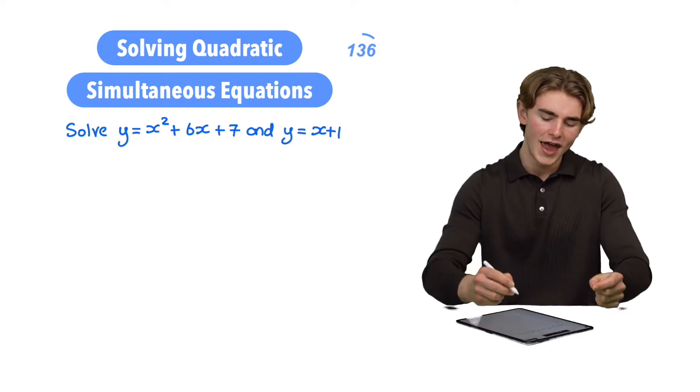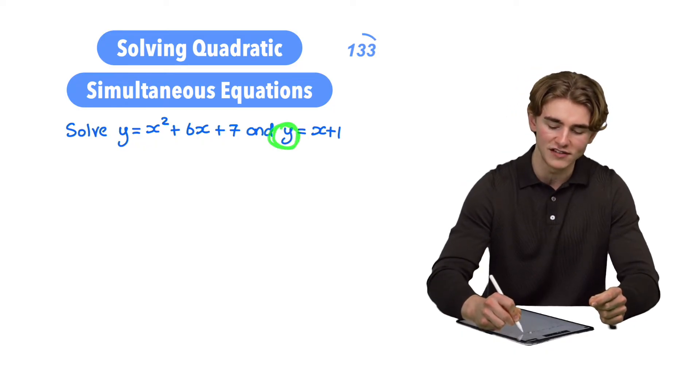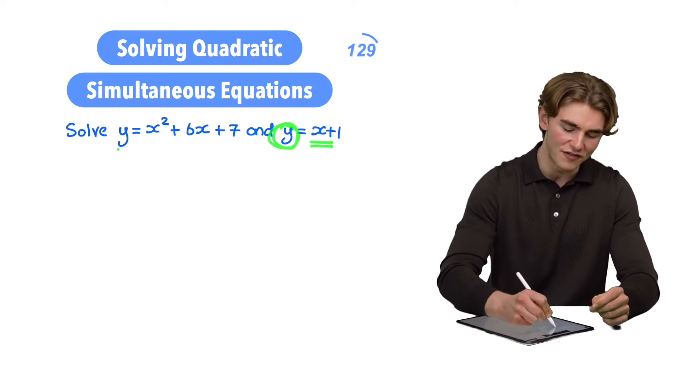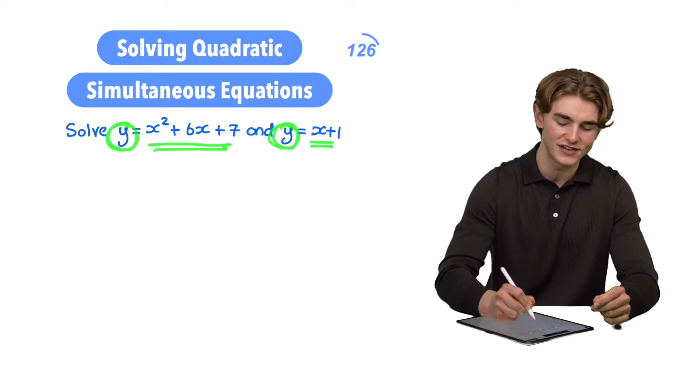Now, how do we do that? Well, our second equation tells us that the value of y is equal to x + 1. And our first equation tells us that the value of y is equal to x² + 6x + 7.